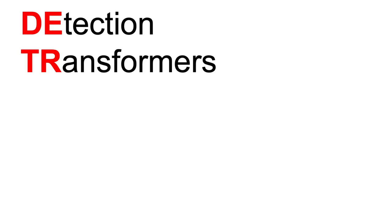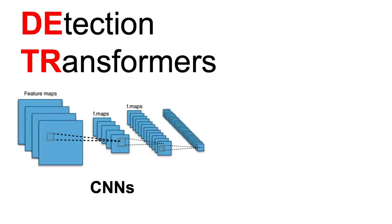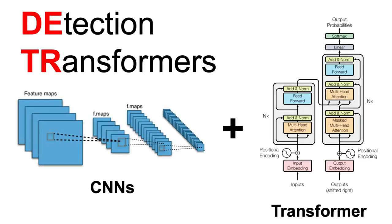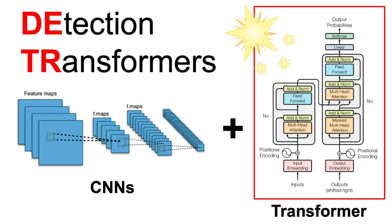Let's start by understanding the basic architecture of DETR. At its core, DETR combines the benefits of both convolutional neural networks and transformers. You may be familiar with CNNs from our previous video, as they are great at handling image-related tasks. But what makes DETR unique is its incorporation of transformers, which has already been proven to be quite exceptional in natural language processing tasks.